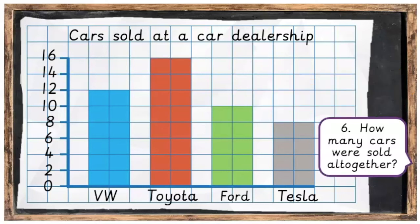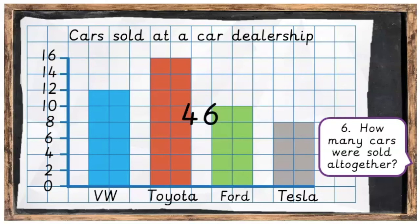And finally, how many cars were sold altogether? Well, if you count the 12 plus 16 plus the 10 plus the 8, you will of course get 46. There were 46 cars sold altogether.